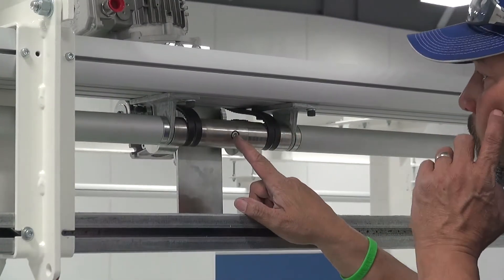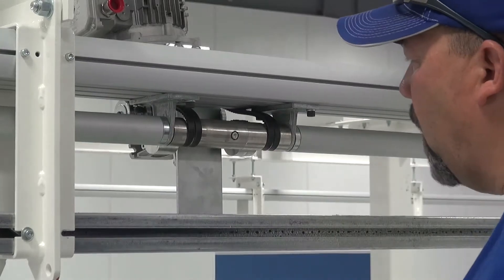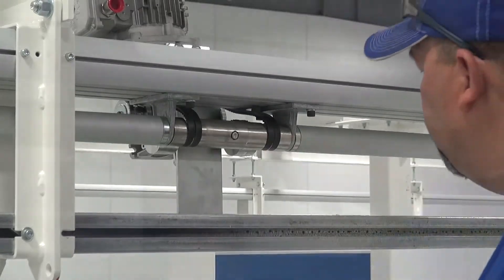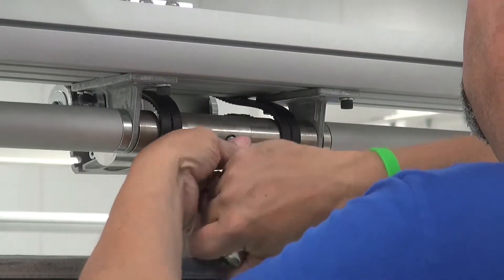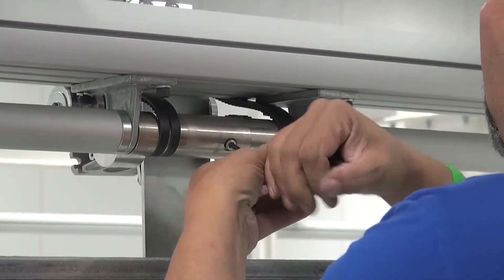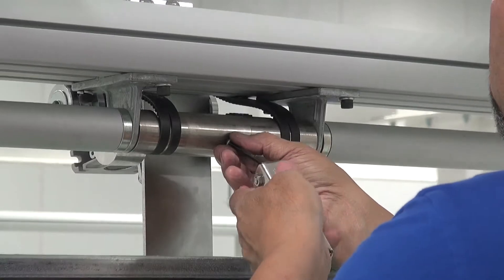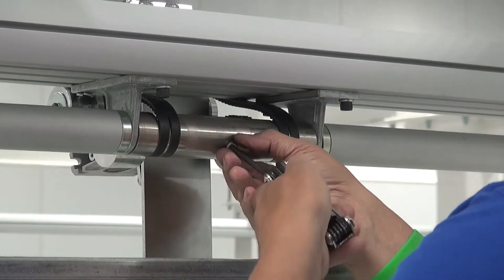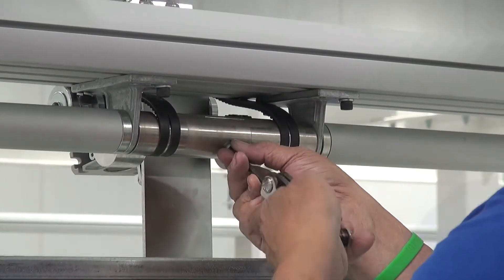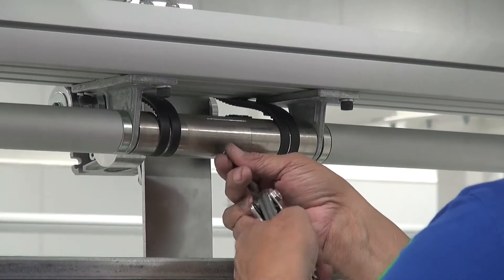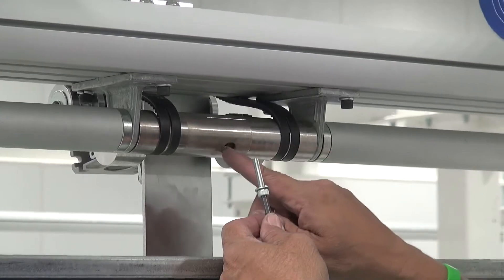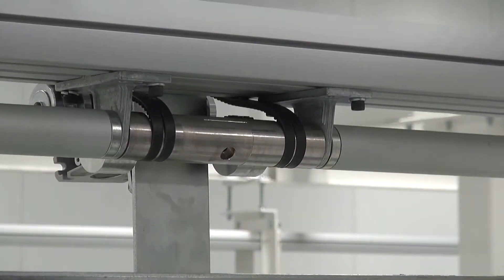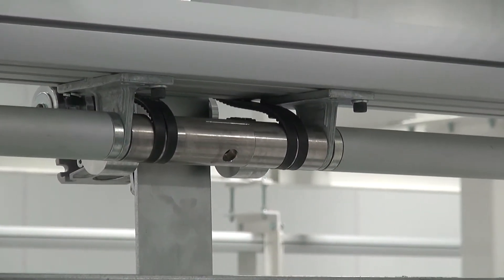The first thing you're going to want to do is take this lap joint screw out. That lap joint is what holds the two halves together on the portable shaft. You'll notice there is a lock washer on the bottom to make sure that screw does not back itself off.